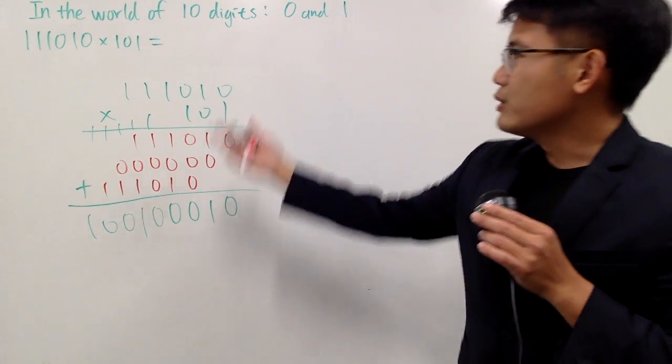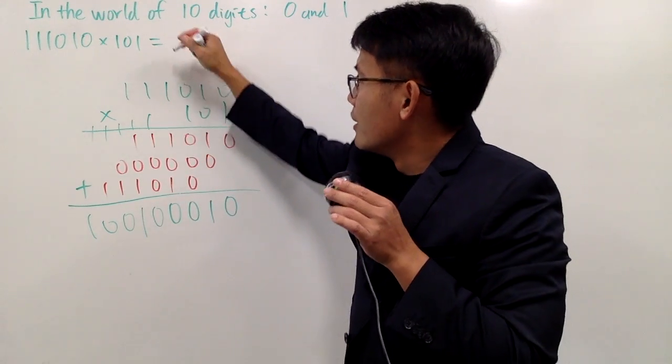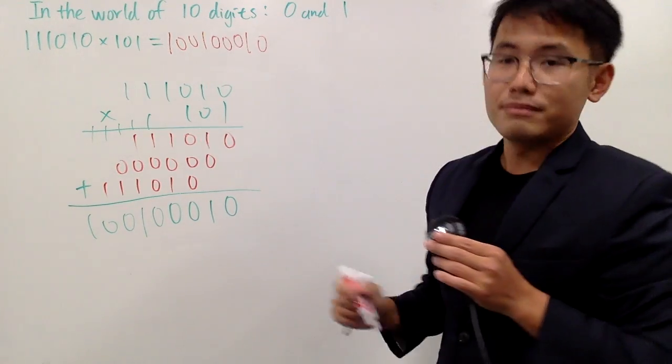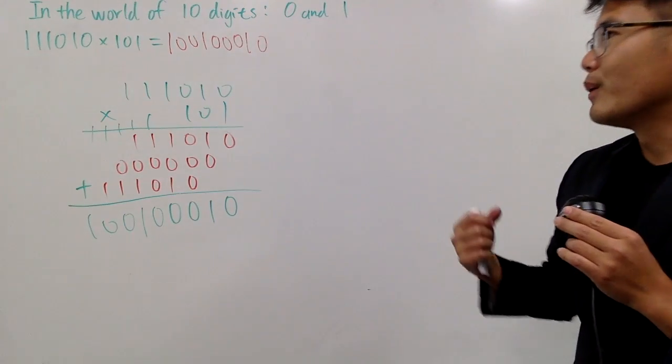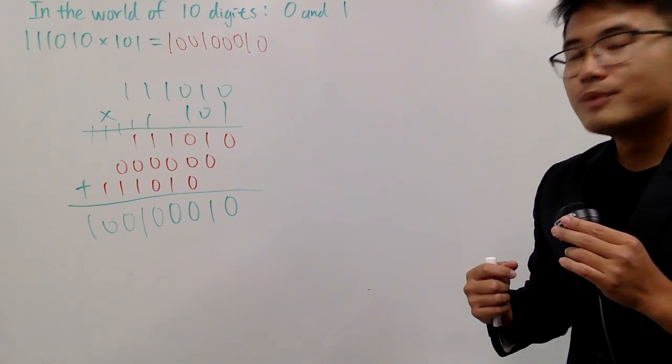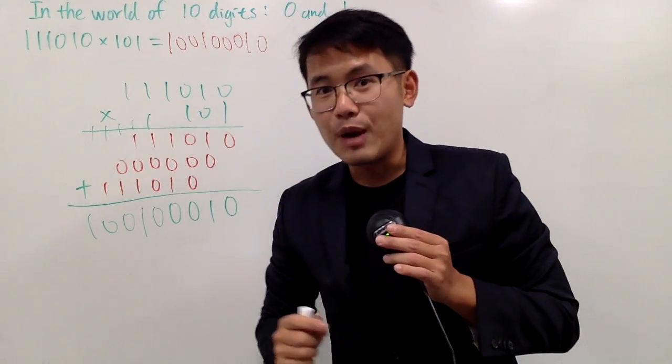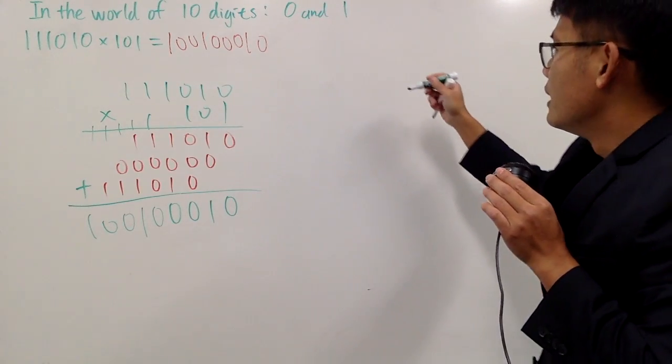So the answer to this is, let's see. Let me write it down. 1, 0, 0, 1, and then 0, 0, 0, 1, 0, like that. Pretty cool, huh? And I want to see if this is correct or not. Well, I will do this divided by that to see if I can get that or not.